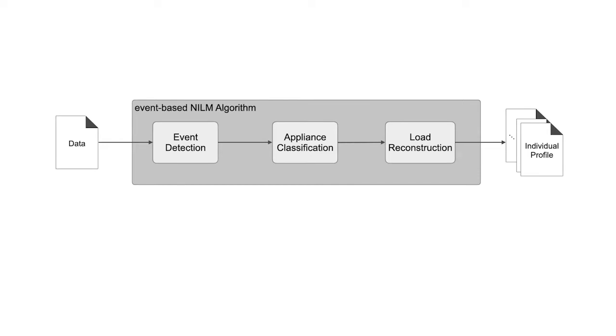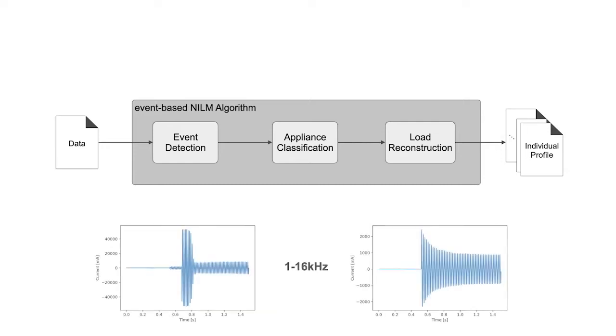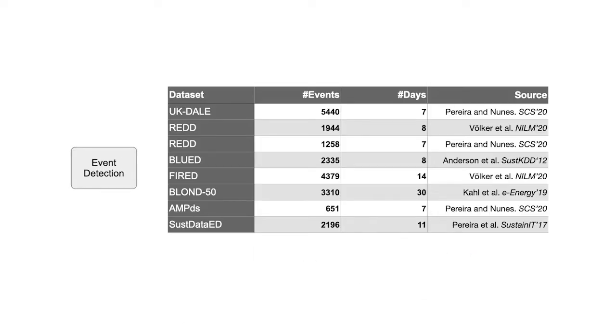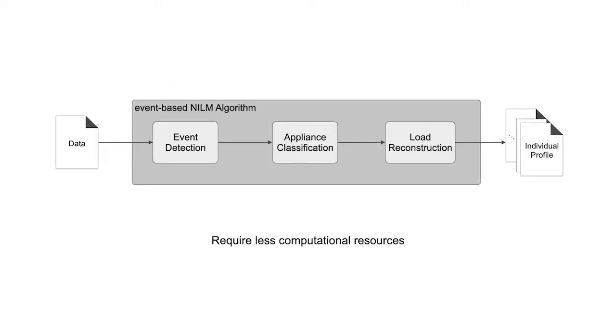In contrast, event-based algorithms divide the disaggregation step into three sub-steps. At first, an event is extracted from the continuous data. Second, the event is classified, basically meaning that the appliance causing the event is identified. And third, a list of events is then used to reconstruct the load profile for each appliance. As the classification and reconstruction is only applied to events, these are applied to much higher resolution data from typically 1 to 16 kilohertz. We did a little research here and looked at the number of events in typical electrical datasets, and these actually sum up to only 275 events per day. Therefore, event-based algorithms require less computation than eventless algorithms, and should be of choice for resource-constrained hardware.